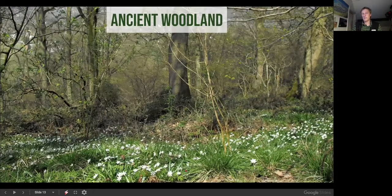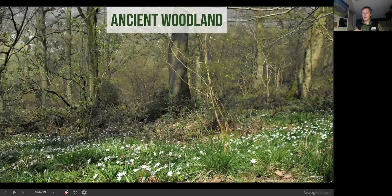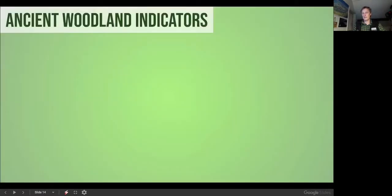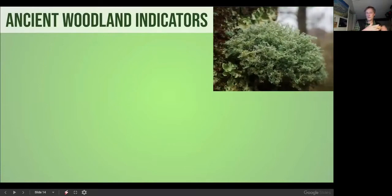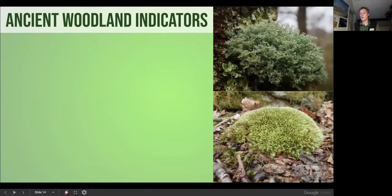Ancient woodlands are those with continual woodland cover for at least 400 years, with a threshold date of 1600 AD when early maps show an area is wooded. In these woodlands we find species that indicate long-term woodland cover. It's not just plants — a whole array of lichens and mosses indicate a woodland has been present, as they can't jump from one woodland to another or colonise open areas; their presence confirms continuous woodland cover.